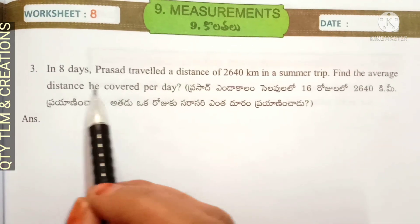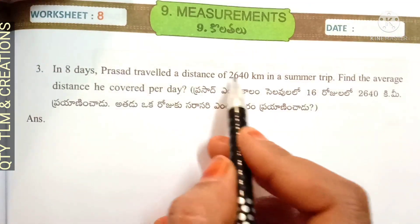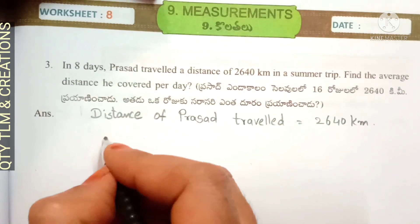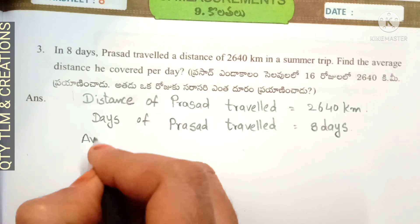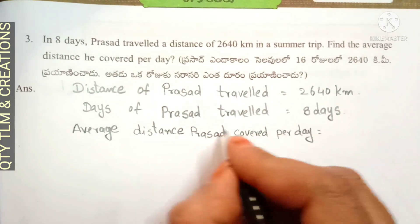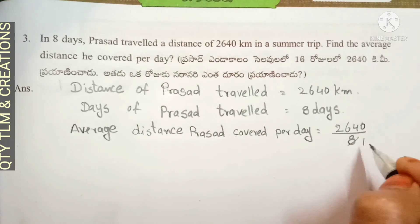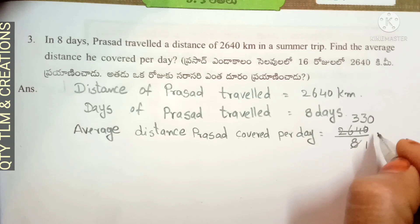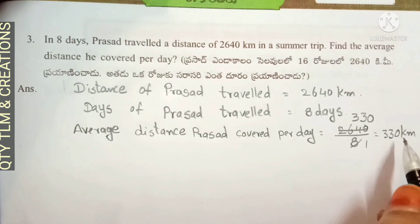Next question: in eight days Prasad traveled a distance of 2640 kilometers on a summer trip. Find the average distance he covered per day. Distance Prasad traveled is equal to 2640 kilometers. Days of Prasad traveled is 8 days. Average distance Prasad covered per day is equal to total distance divided by total days. We can cancel: 8 ones are 8, 8 threes are 24, 8 zeros are zero — that is equal to 330 kilometers. Average distance Prasad covered per day is equal to 330 kilometers.